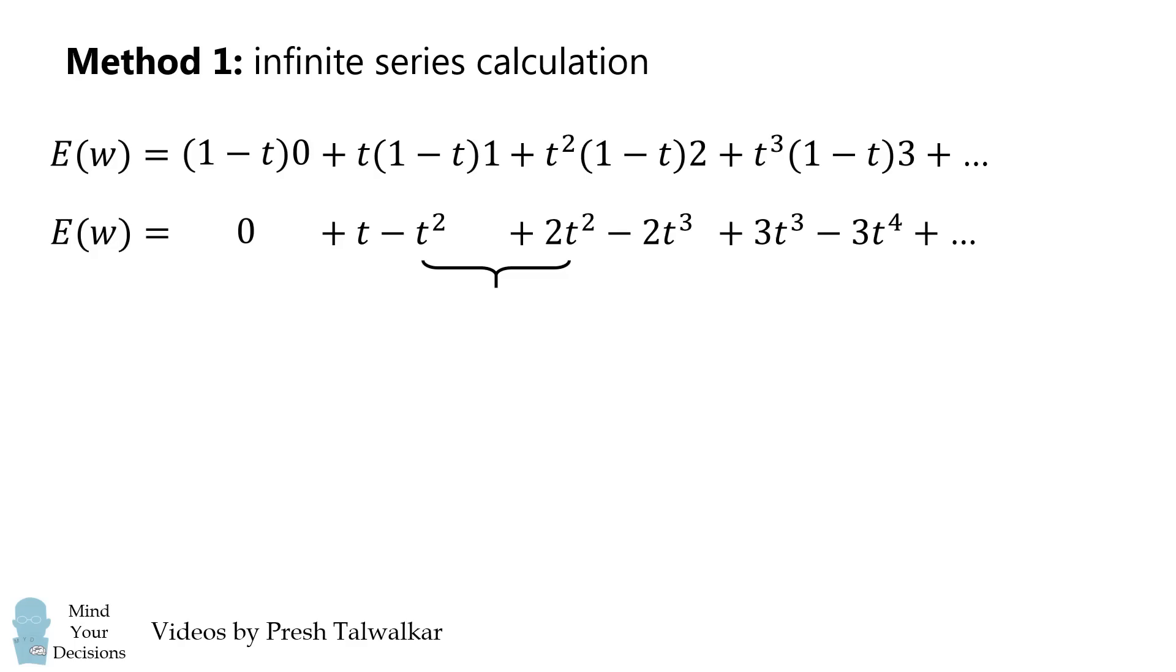So we'll first group these T squared terms. Then we will go ahead and do the same thing and group the T cubed terms. Then we'll continue to do that. These T squared terms will simplify to be T squared. The T cubed terms will simplify to be T cubed, and this pattern will continue. So we end up with a simple geometric series, and this is equal to T all over 1 minus its common ratio of T. And that's our answer.